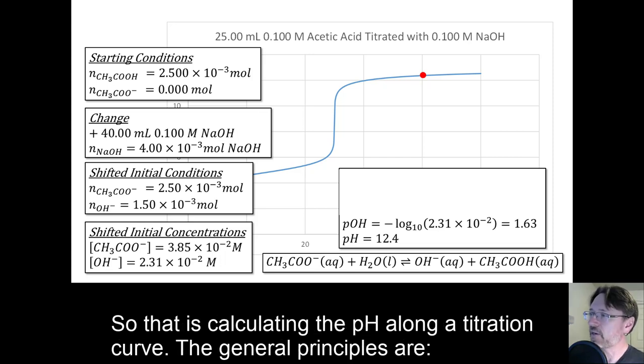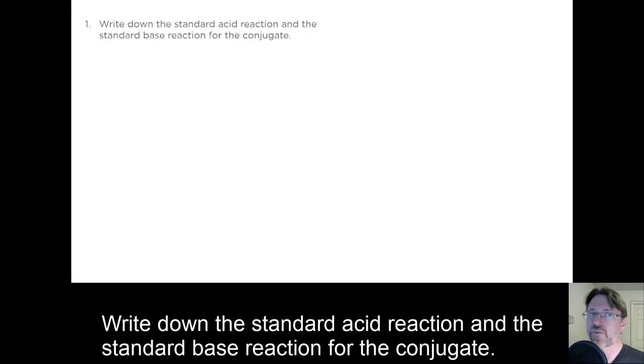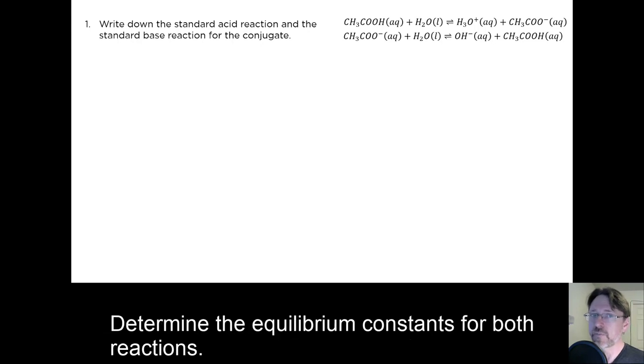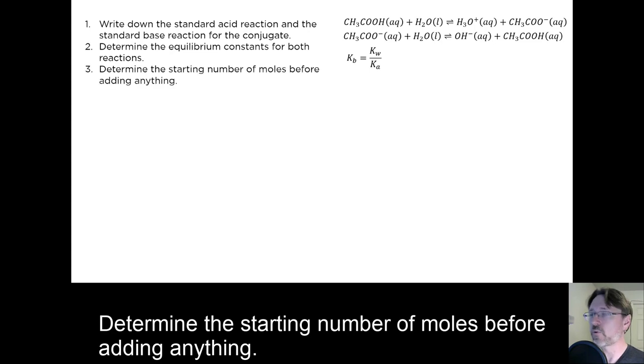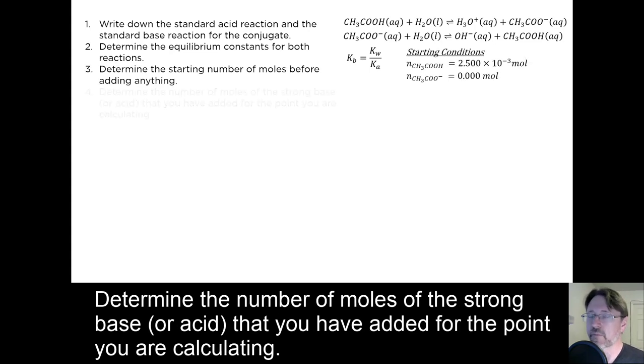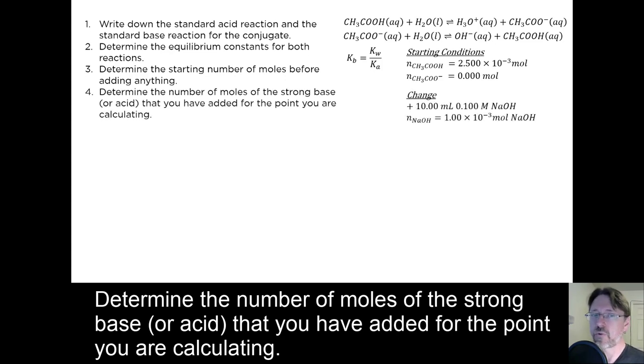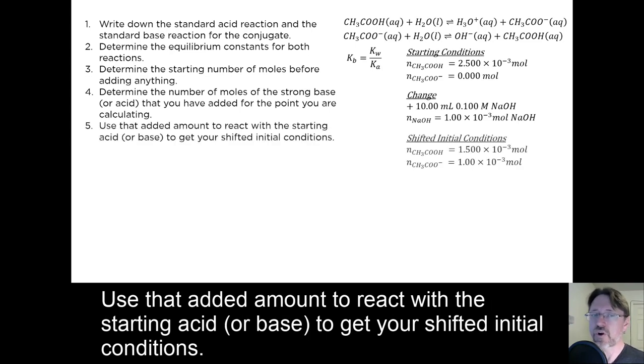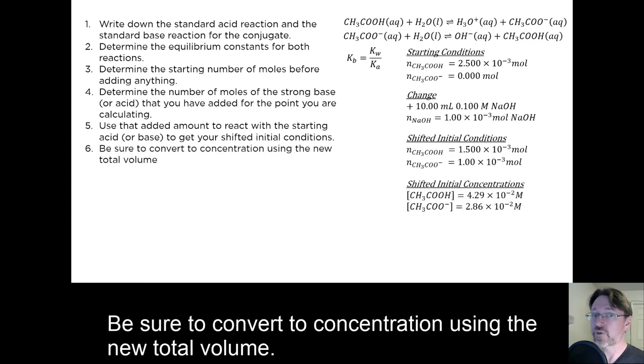So that is calculating the pH along a titration curve. The general principles are write down the standard acid reaction and the standard base reaction for the conjugate. Determine the equilibrium constants for both reactions. Determine the starting number of moles before adding anything. Determine the number of moles of the strong base that you have added for the point you are calculating. Use that added amount to react with the starting acid or base to get your shifted initial conditions. Be sure to convert to concentration using the new total volume.